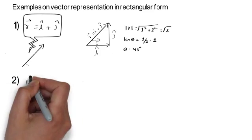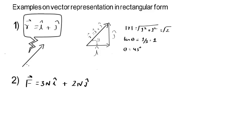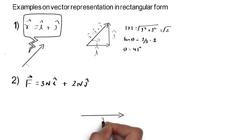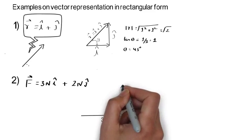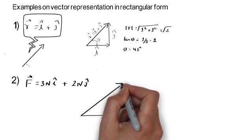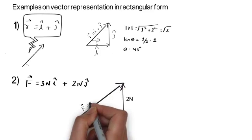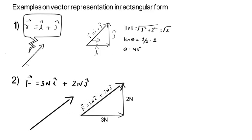Example 2: suppose the force acting on a body is 3î + 2ĵ N. That means we first move 3 N in the X direction, then 2 N in the Y direction. The vector from the starting point to the ending point represents 3î + 2ĵ N.